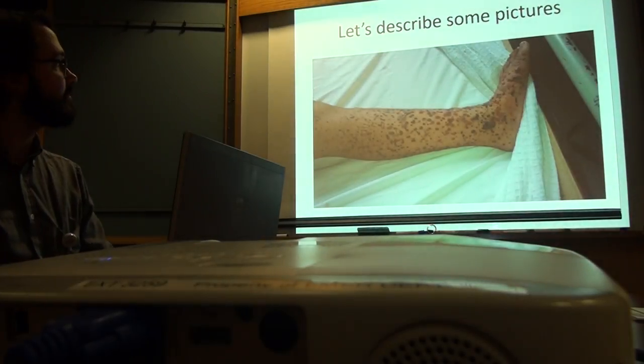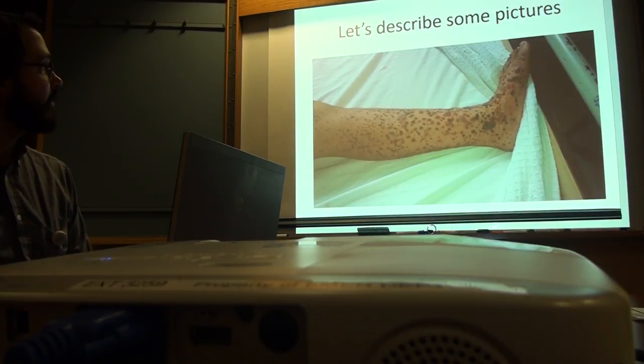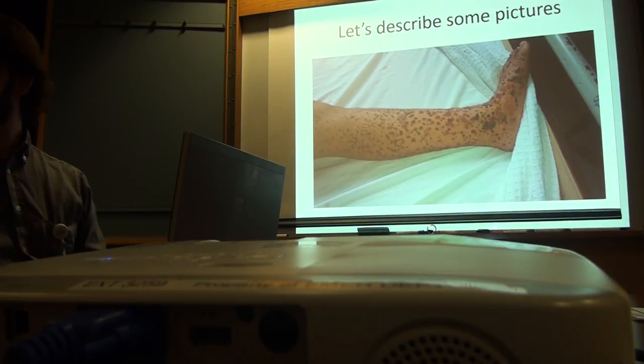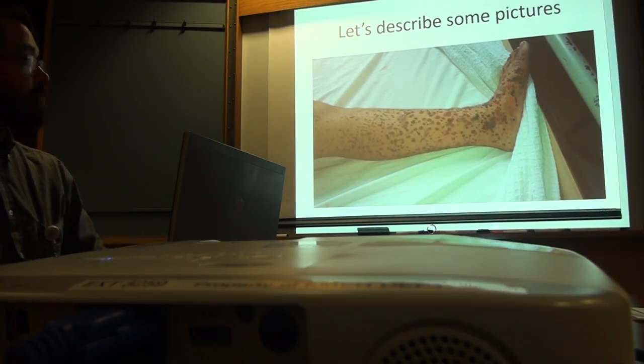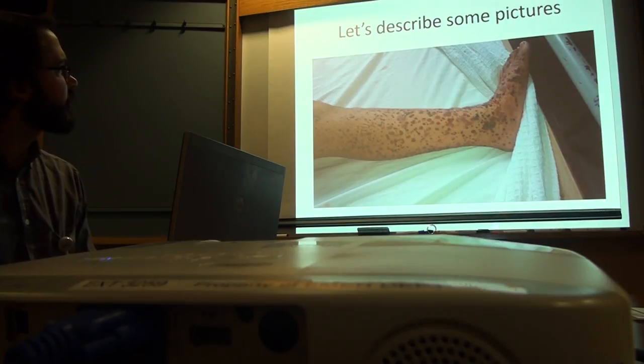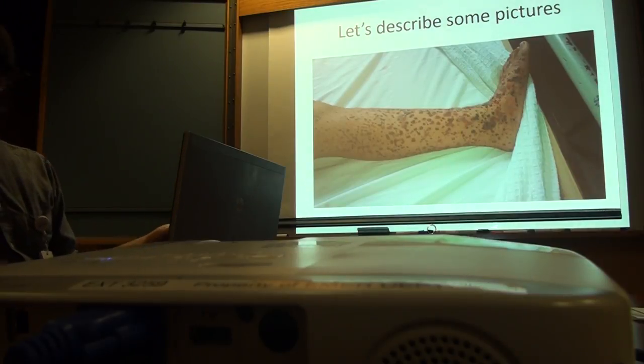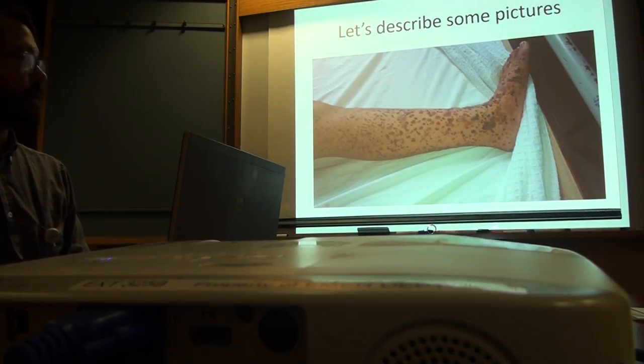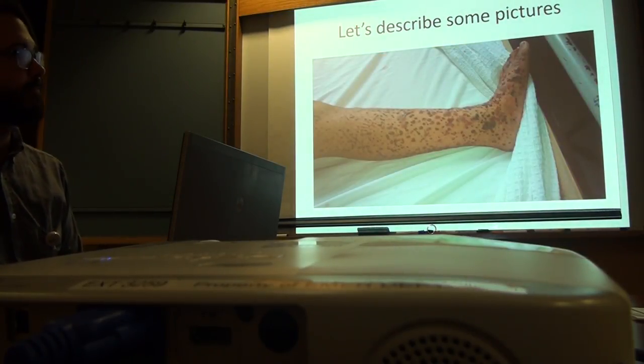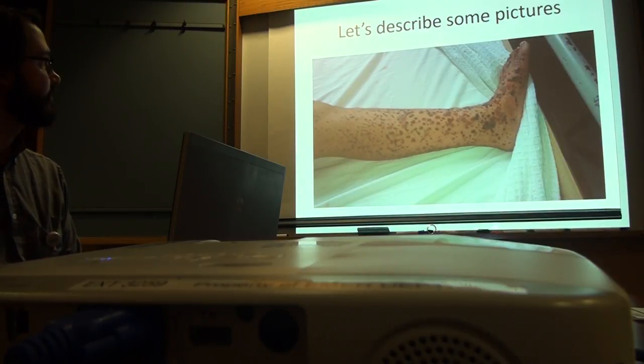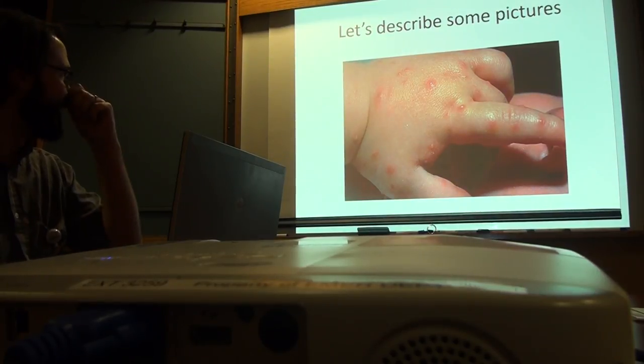How about this? Purpuric. So purpuric - we're imagining that blood's in the skin. We'd have to push on it to be sure. It also looks like it's raised. Yeah, this is classic palpable purpura. Presumably these would be non-blanching, which would make them purpura. Do you know what he has? This is meningococcemia. This is no bueno.